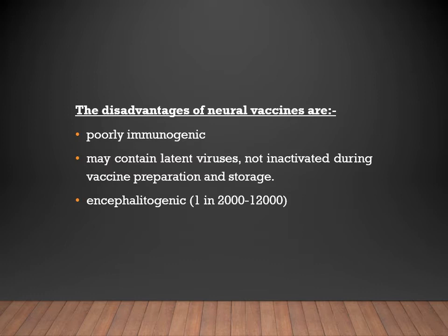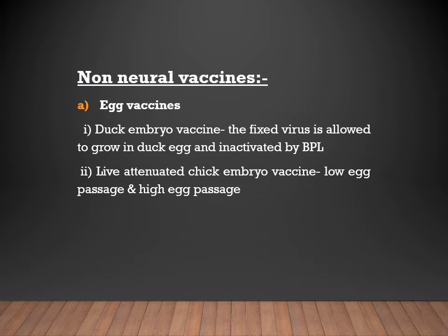In developing countries, neural vaccines may still be used due to low cost. Non-neural vaccines include egg-based vaccines. The duck embryo vaccine grows the fixed virus in duck eggs and inactivates it with beta-propiolactone. The live veterinary chick embryo vaccine grows the virus in embryo and passages it — moving it from one egg to another — and can be low egg passage or high egg passage.